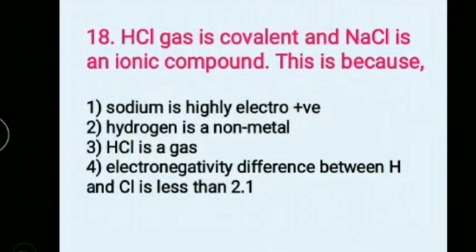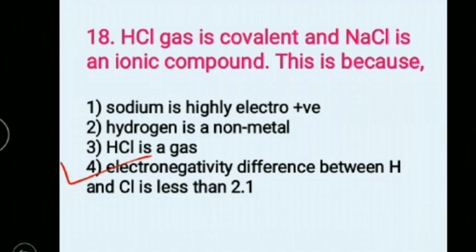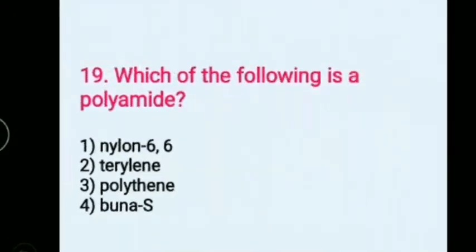HCl gas is covalent and NaCl is an ionic compound. This is because: Options: 1) Sodium is highly electronegative, 2) Hydrogen is a non-metal, 3) HCl is a gas, 4) Electronegativity difference between H and Cl is less than 2.1. Answer: 4) Electronegativity difference between H and Cl is less than 2.1.